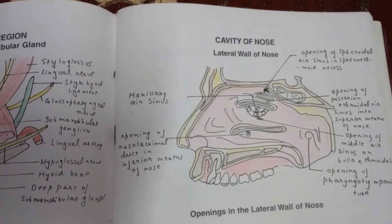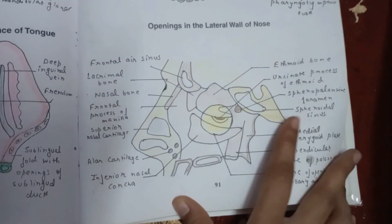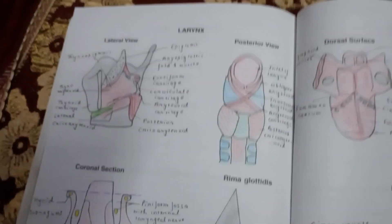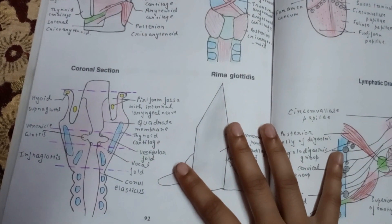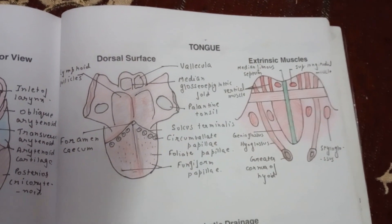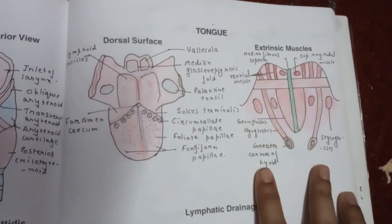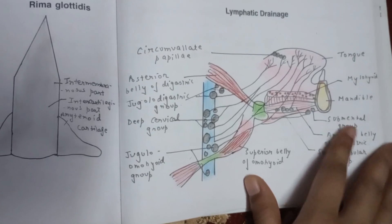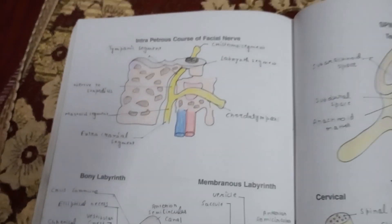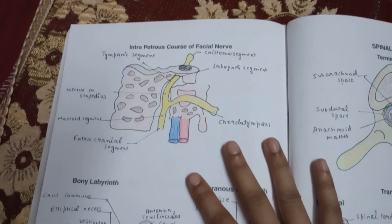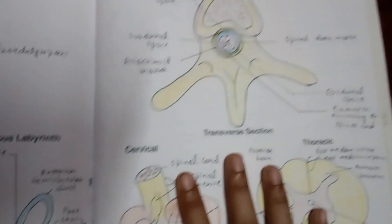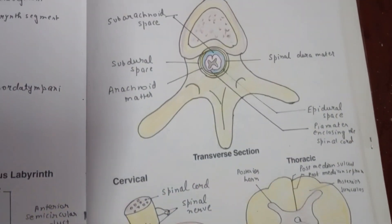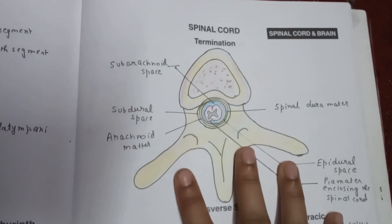This is the cavity of nose, openings in the lateral wall of nose, your larynx — lateral view and posterior view, coronal section. This is the trunk — dorsal surface and intrinsic muscles of the tongue. This is the lymphatic drainage. Intra-petrous part of the facial nerve. This is the bony labyrinth, membranes of the labyrinth. This is your spinal cord — after head and neck, here comes the spinal cord and brain.